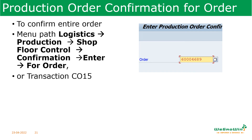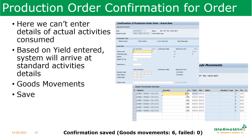Next is production order confirmation at the entire order level, done through transaction CO15. Enter CO15 and put the production order number — it will bring you to the page to enter details. Here we cannot enter actual activities operation-wise; we are entering only the total confirmation for the order, so we can enter only the quantity and yield. The system will calculate the standard time and what consumption appears in the goods movements page. Save it, and the system will confirm the quantity with goods issue and goods receipt happening.